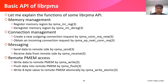Let's look at the basic API of librpma. For memory management, we can register a memory region by rpma_mr_reg and de-register by rpma_mr_dereg. For connection management, we can create a new outgoing connection request by rpma_conn_req_new, and obtain an incoming connection request by rpma_ep_next_conn_req. For messaging, we can send data to the remote side by rpma_send and receive data by rpma_recv. For remote P-memory access, we can write data by rpma_write, flush data by rpma_flush, and write an 8-byte value atomically by rpma_write_atomic.